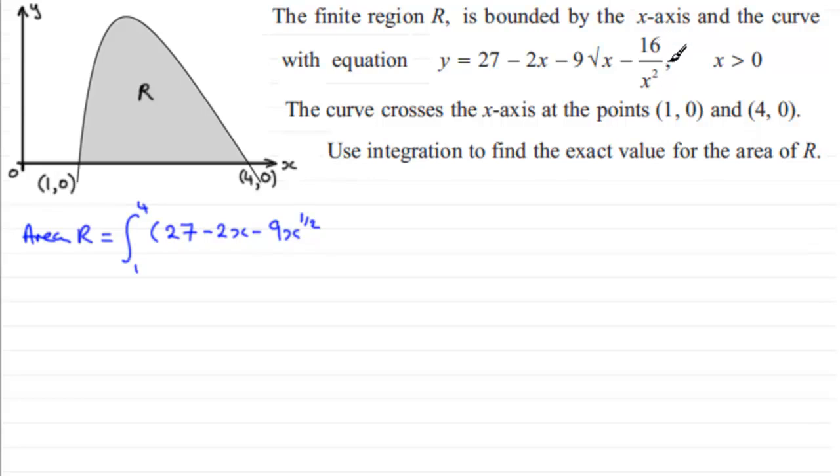And then for minus 16 over x squared, that is 16 times 1 over x squared, and 1 over x squared is x to the power minus 2, so this becomes minus 16 x to the power minus 2.